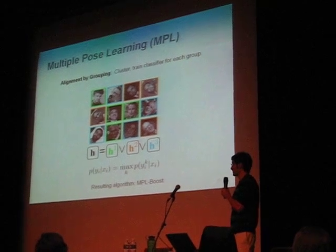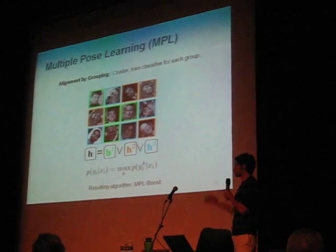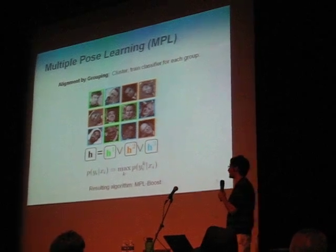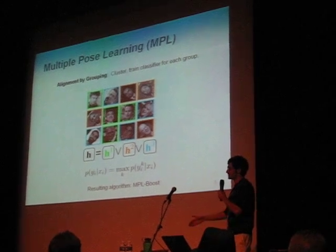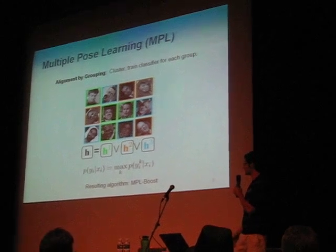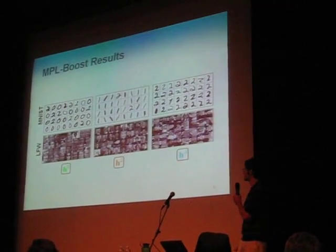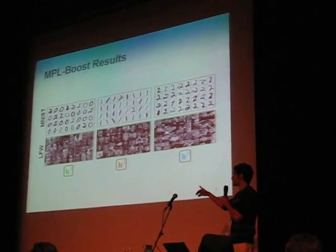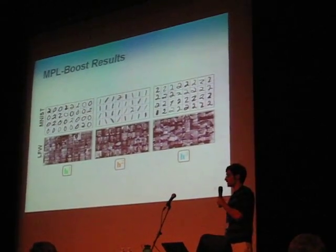It turns out that the math is actually very similar to MIL, even though the problem is pretty different. There's a very similar equation that you plug into the likelihood, and you use the gradient boosting framework, and you end up with a nice boosting algorithm that we call MPL boost — multiple post learning. These are the groups that we get after we train our classifier, and this is done simultaneously as you're training the classifiers.